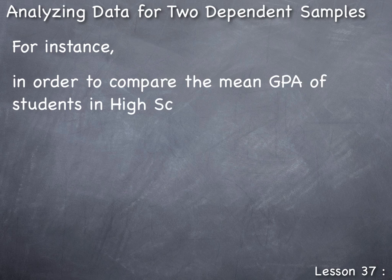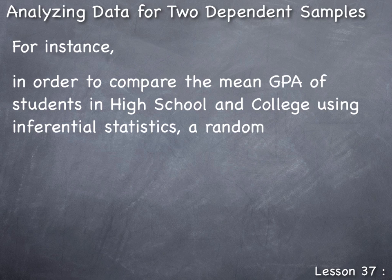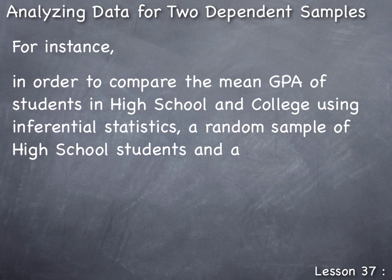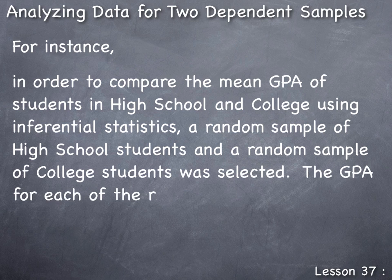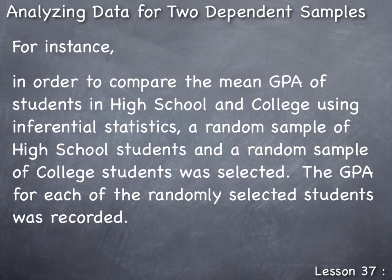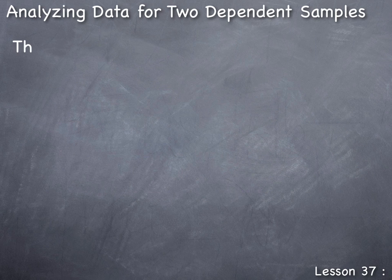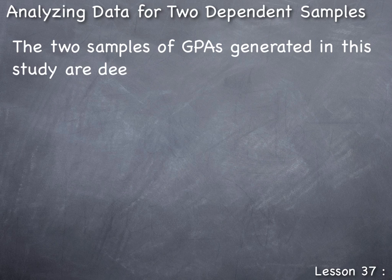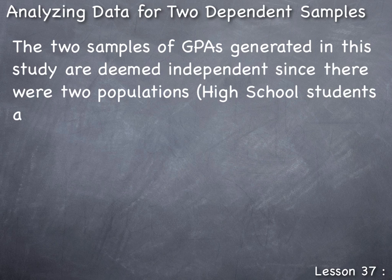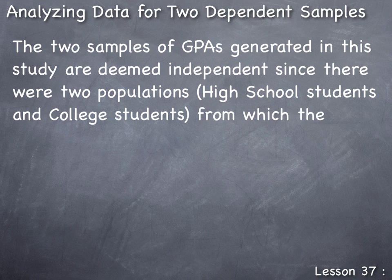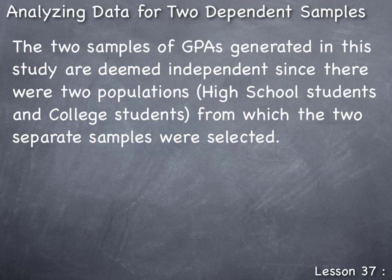For instance, in order to compare the mean GPA of students in high school and college using inferential statistics, a random sample of high school students and a random sample of college students was selected. The GPA for each of the randomly selected students was recorded. The two samples of GPAs generated in this study are deemed independent since there were two populations — high school students and college students — from which the two separate samples were selected.